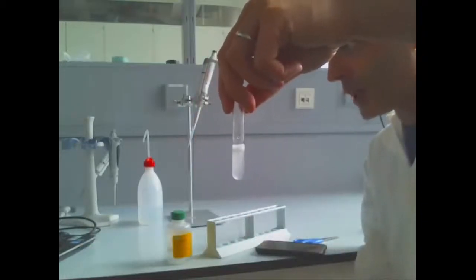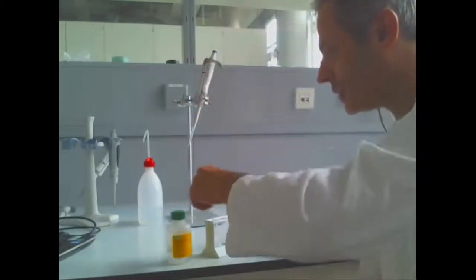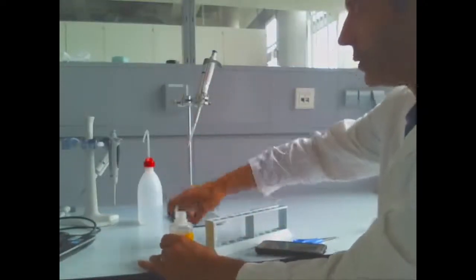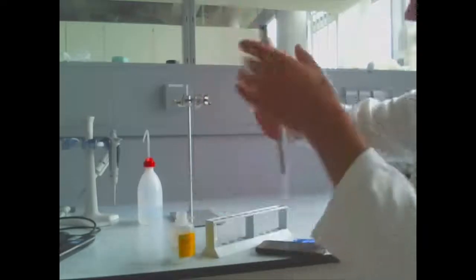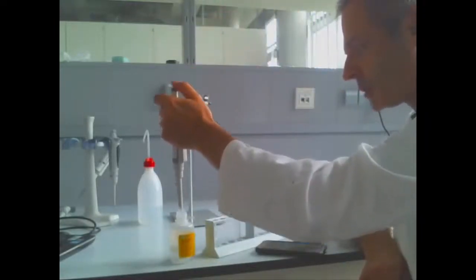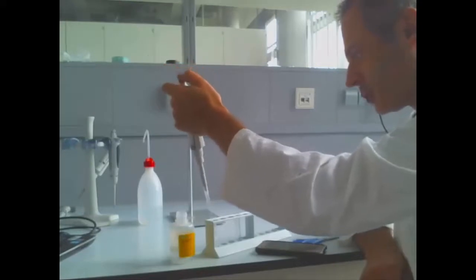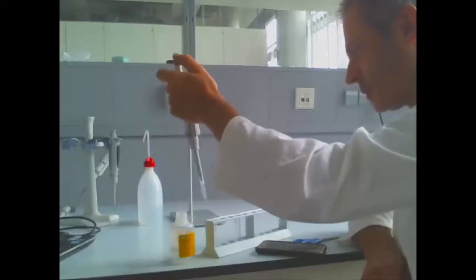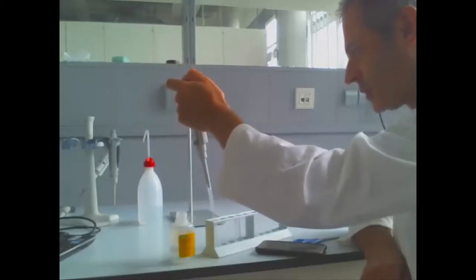So now I'm going to add two milliliters of lysis buffer, which is STS, so mostly salt. It also contains some buffer. The buffer is in there to keep the pH constant. That's one milliliter. That's two milliliters.